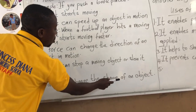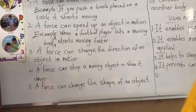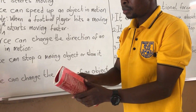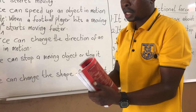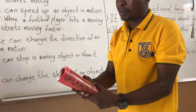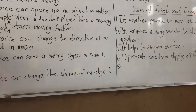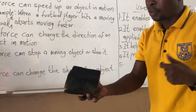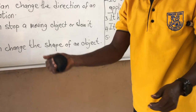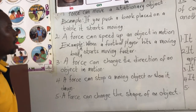Number five: a force can change the shape of an object. Look at this book — it is in a rectangular form. I am not going to apply force on it. Now look at it — I am forcing the book. You can see that the shape was in a rectangular form, but now I have changed it; it is now in a cylindrical form. At the same time, look at this foam or duster. Now I am applying force — you see, I have changed the shape.